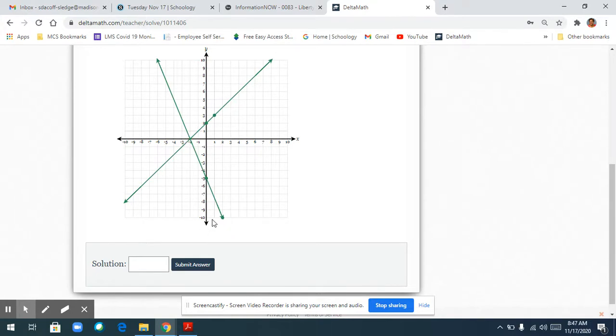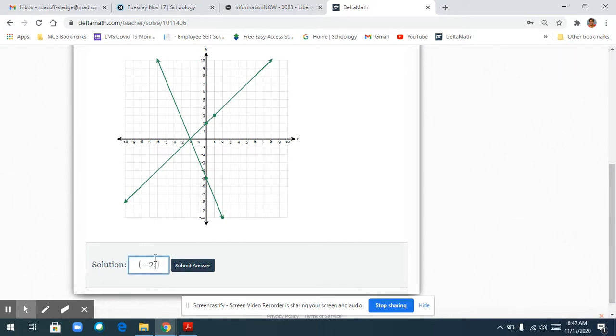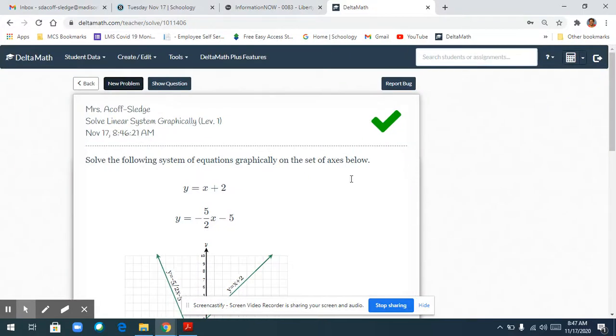My solution is right here, and that's where x is negative 2 and y is 0. Let's check. All right. That's all, y'all. Thank you.